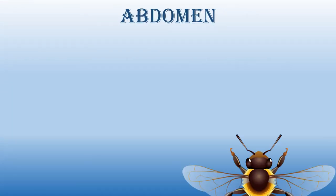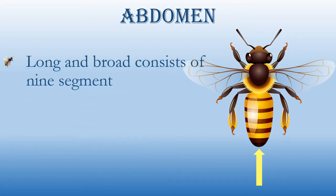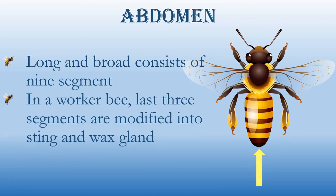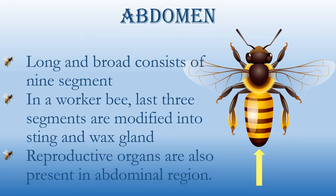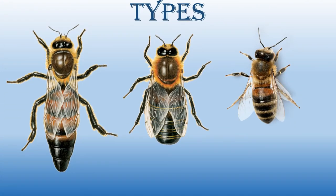The last part is the abdomen. The abdominal region is long and broad, consisting of nine segments. In a worker bee, the last three segments are modified into a sting and wax gland. Reproductive organs are also present in the abdominal region.